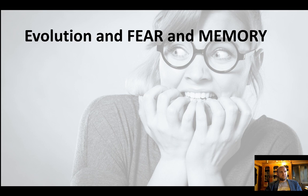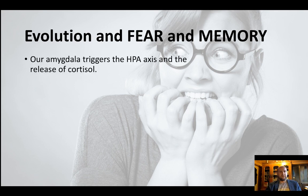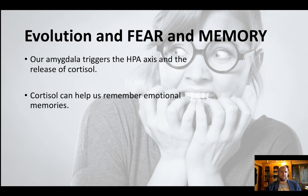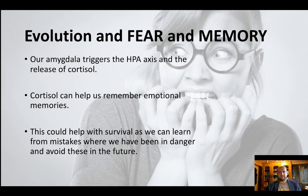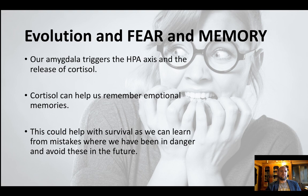That would be enough for a short answer response, but to develop further we can look at the role of fear and memory. The amygdala triggers the HPA axis — the hypothalamus-pituitary-adrenal axis — which releases the stress hormone cortisol. A short burst of cortisol during stress can actually improve memory of emotional information, and this can be explained evolutionarily: if we get into dangerous situations and release cortisol, in the future we'll remember that situation and get out. For example, if you're mugged in a dangerous neighborhood, next time you're there you'll remember and take a different way home, or you'll remember where you saw a poisonous snake or a lion's den.